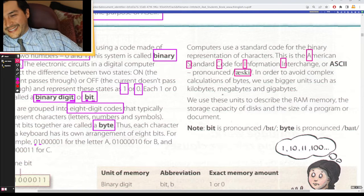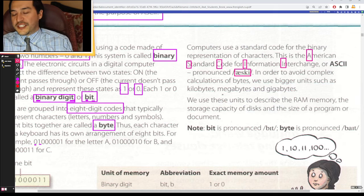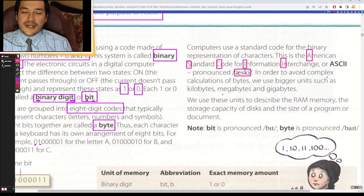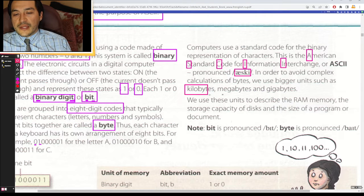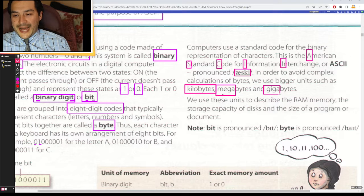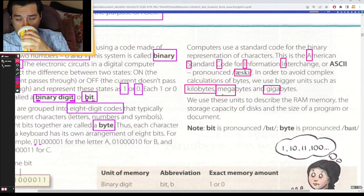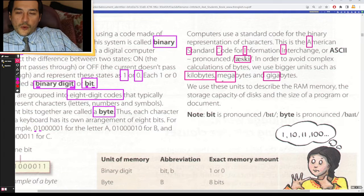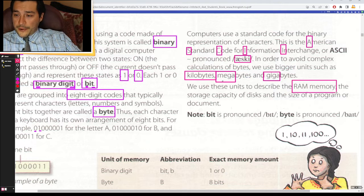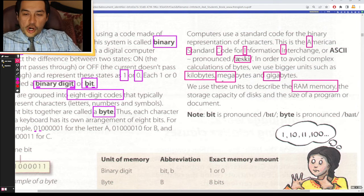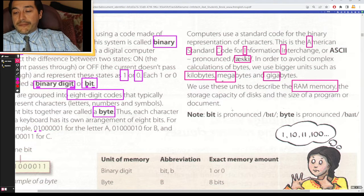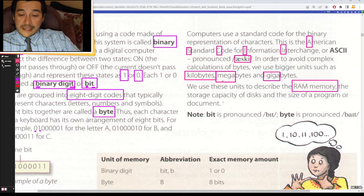ASCII, in order to avoid complex calculations of bytes, we use bigger units, such as kilobytes, megabytes, and gigabytes. We use these units to describe the RAM memory, the storage capacity of disks, and the size of a program or a document.